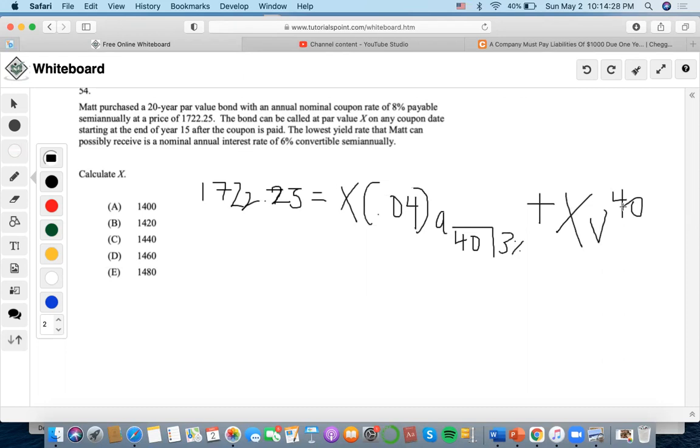So now we solve for this equation first. I'll set 1 as the payment, 40 as the number of periods, 3 as interest rate, 0 as future value, compute present value: 23.11.